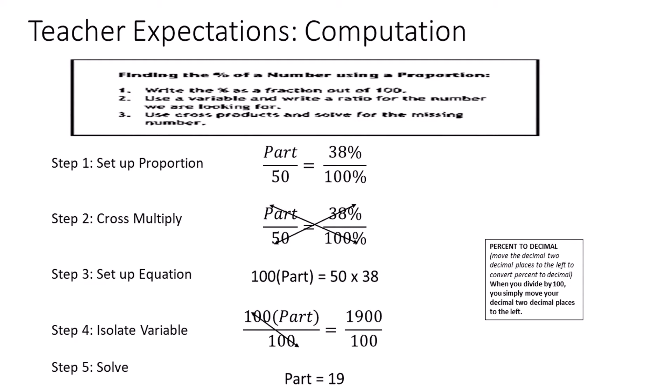We bring everything down and now we want to isolate our variable. When we isolate our variable, we are left with a part of 19, so our part is 19 out of a whole of 50.